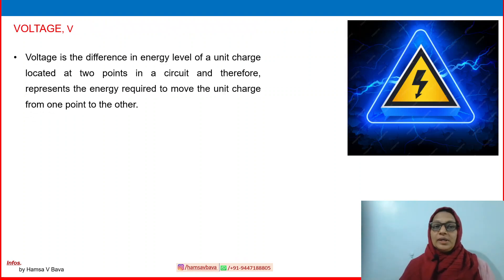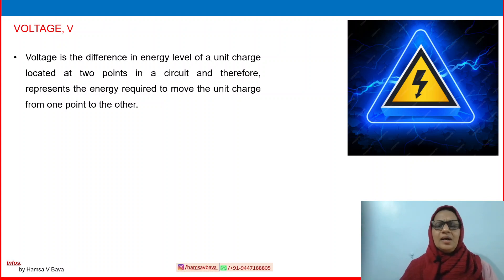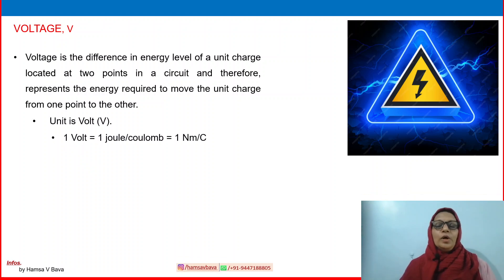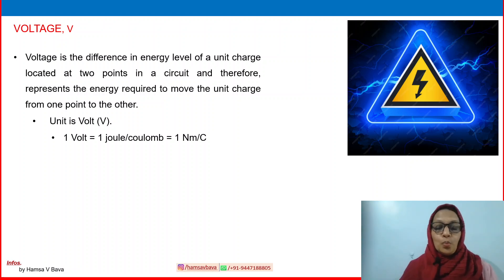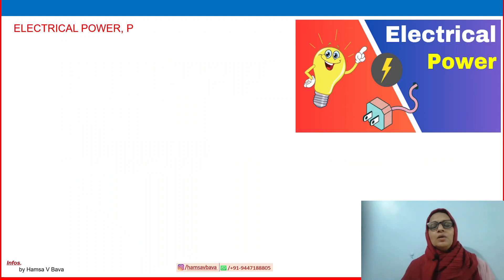Voltage is the difference in energy levels of a unit charge located at two points in a circuit, and therefore represents the energy required to move the unit charge from one point to the other. The unit is volt; one volt is the energy required to move unit charge — that is, one joule per coulomb, and since joule is newton-meter, one newton-meter per coulomb. A voltmeter is the instrument used to measure voltage.